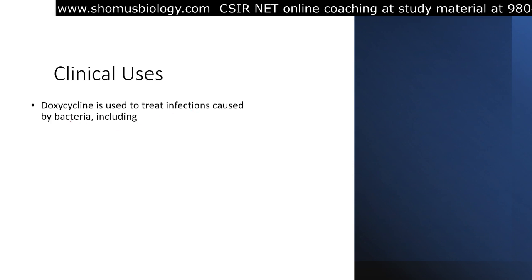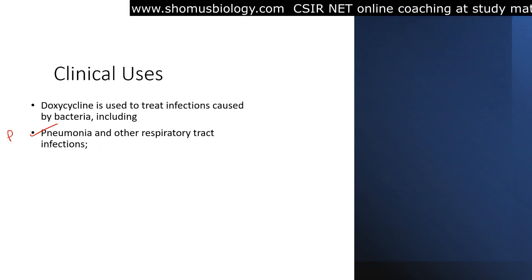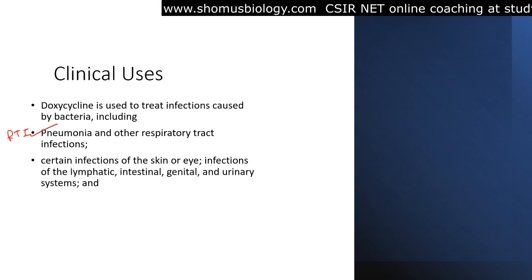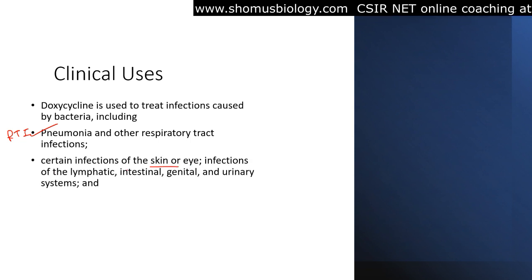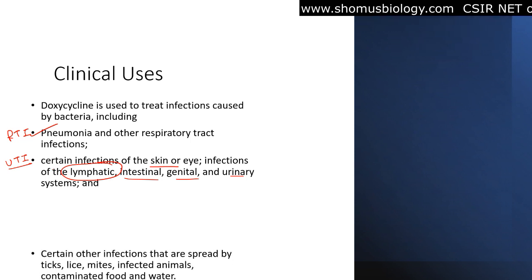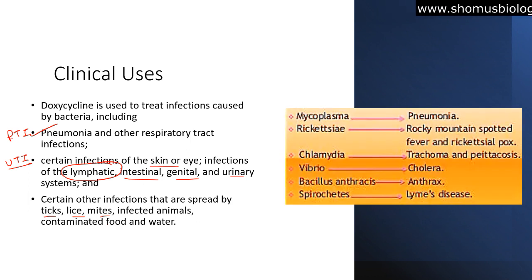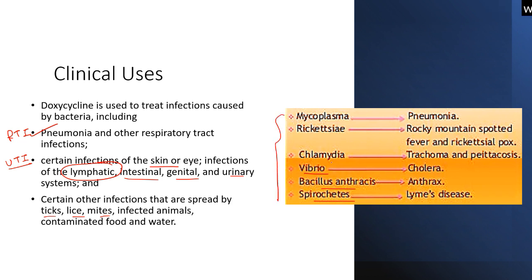The clinical uses of doxycycline include treatment of bacterial infections — antibacterial dosage against pneumonia and other respiratory tract infections, skin and eye infections, and infections of the lymphatic, intestinal, genital, and urinary systems including UTIs. Certain infections spread by ticks, lice, mites, and infected animals — such as chlamydia and Lyme disease — are also treated. Specific organisms include Mycoplasma, Rickettsia, Chlamydia, Vibrio cholerae, Bacillus anthracis, and spirochetes — all of which can be killed by doxycycline.